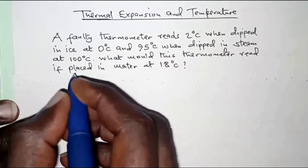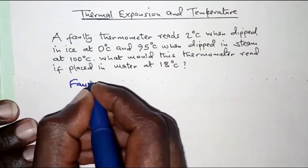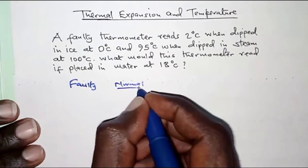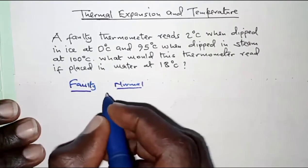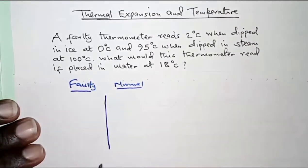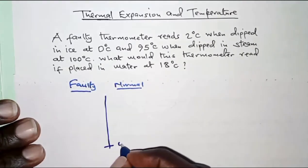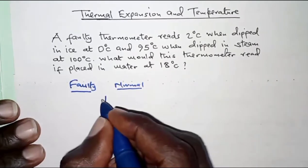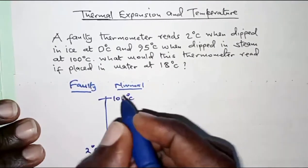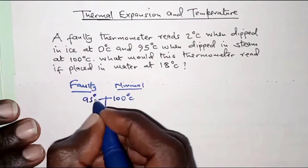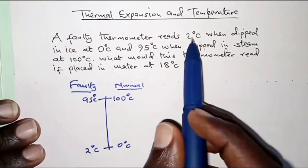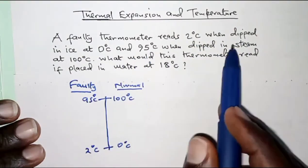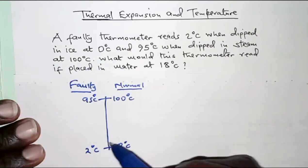In this question we have a faulty thermometer being compared with a normal one. For the faulty thermometer, when it is 0 degrees Celsius it reads 2 degrees Celsius, and when it is 100 degrees Celsius it reads 95 degrees Celsius. So it reads 2 degrees Celsius when dipped in ice and 95 degrees Celsius when dipped in steam at 100 degrees Celsius.